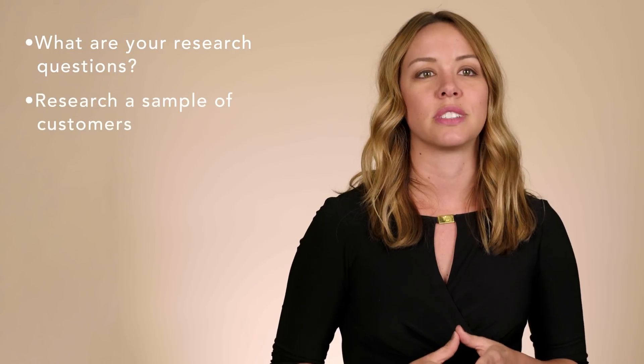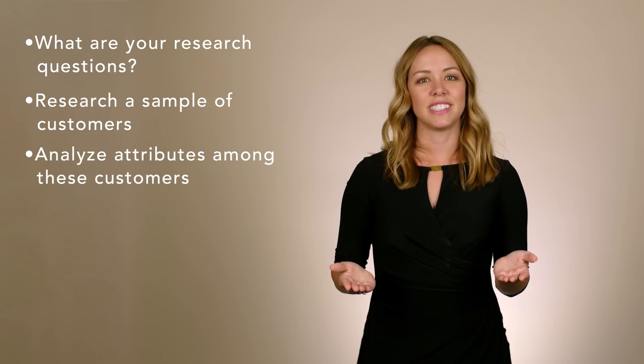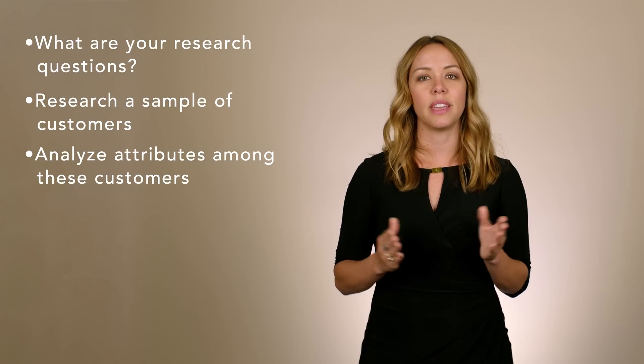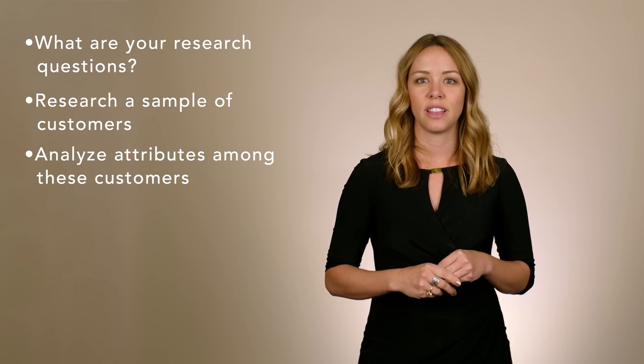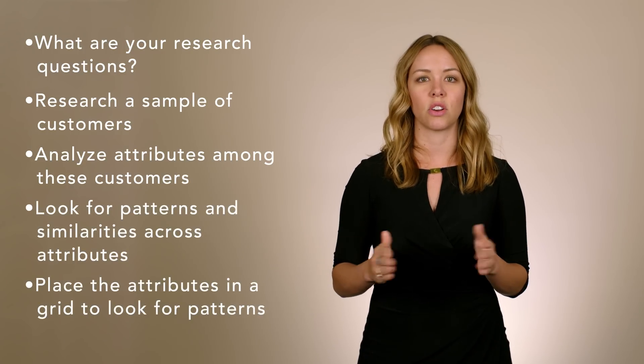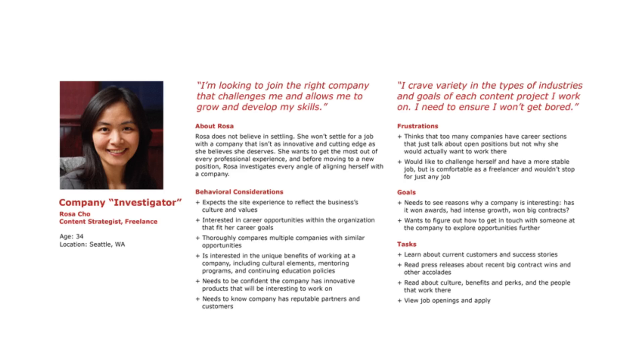The same process applies when you're looking for segments within people. It's just not as easy to see because we can't see people's attributes. So define what your research questions are — you may be looking at things like goals, priorities, and mindsets — and research a sample of your customers. Eight to twelve people is enough. Analyze these key attributes among these customers that might impact how they use your product. Then look for patterns and similarities across these attributes. Once you find your segments, you can create your persona, which is a single document that communicates these attributes and illustrates what makes each segment unique.